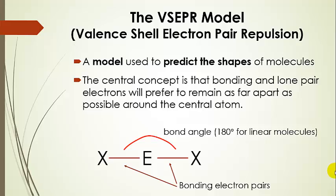What we're going to talk about is something called the VSEPR model — valence shell electron pair repulsion. This is a model used to predict the shapes of molecules. The central concept to keep in mind is that bonding and lone pair electrons want to stay as far apart as they can around the central atom. For example, here we have a linear molecule where the central atom is bonded to two other atoms, and as far apart as they can possibly be ends up being 180 degrees. When we have two bonds around a central atom, the largest bond angle can be 180 degrees.